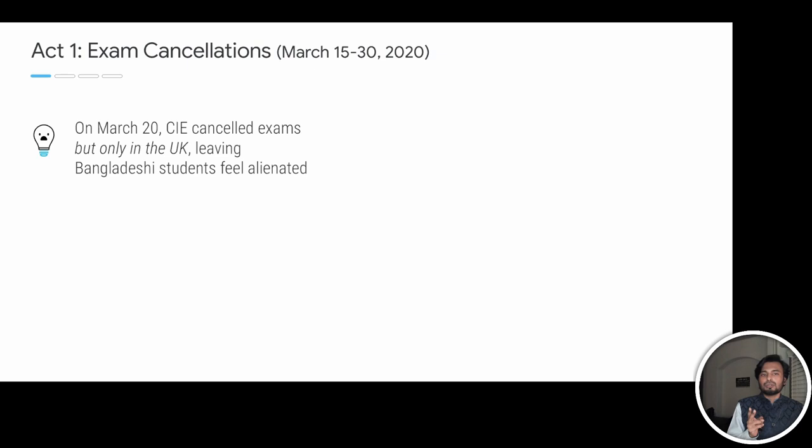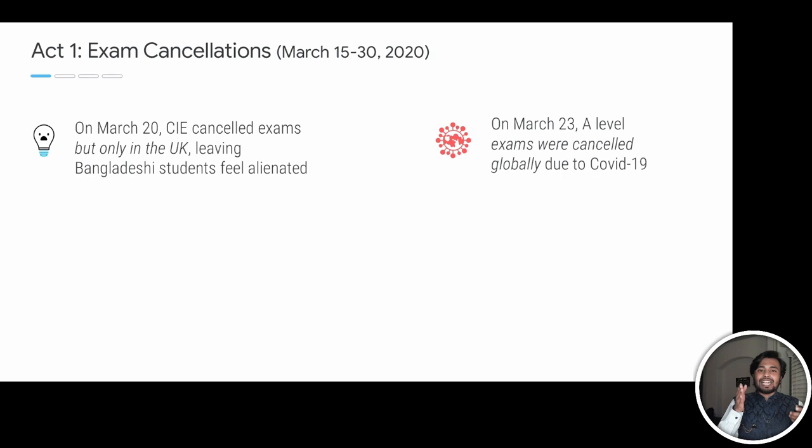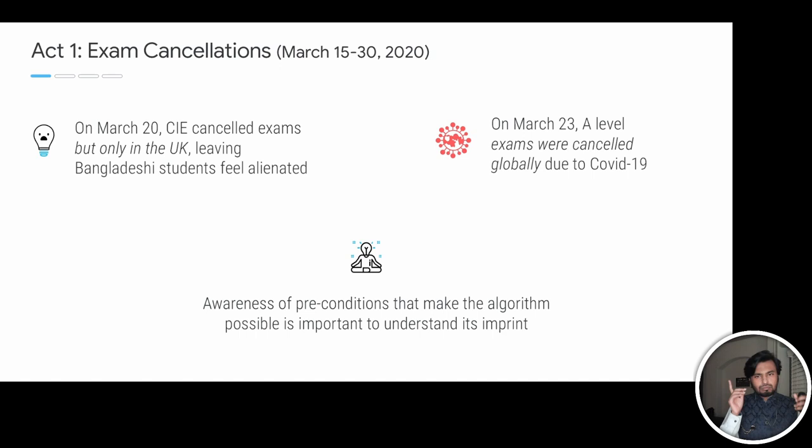Let's get started with the first act. There are two things to note. First, on March 20th, Cambridge or CIE canceled the exams, but only in the UK, making Bangladeshi students feel rather alienated. Second, after facing backlash, on March 23rd, the exams were canceled globally. The thing to remember here is that these are the preconditions that can make the algorithm possible. Paying attention to these preconditions actually helps us understand the imprint later on.